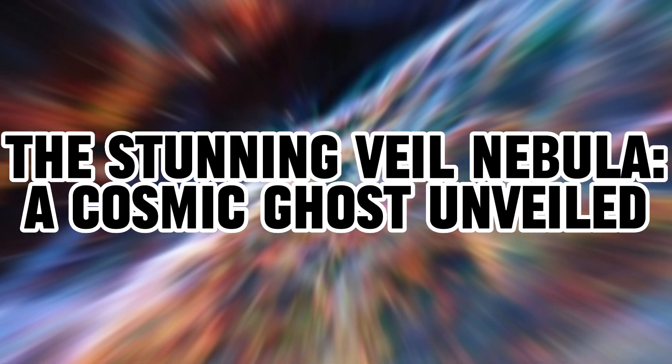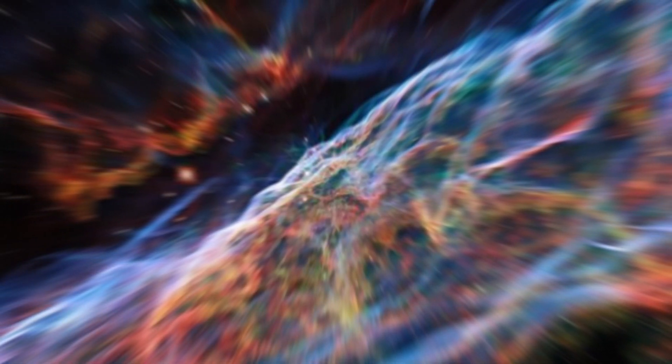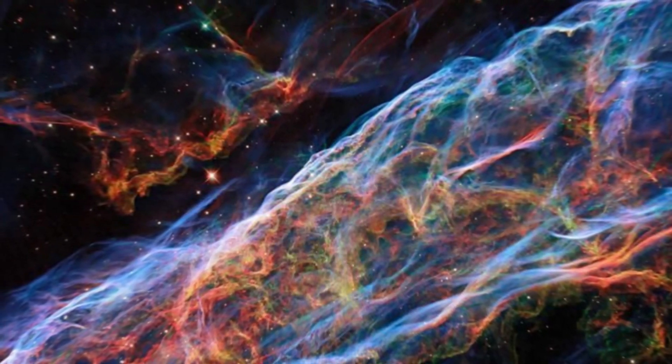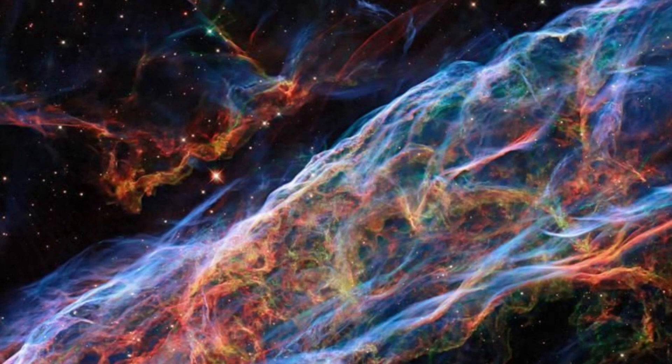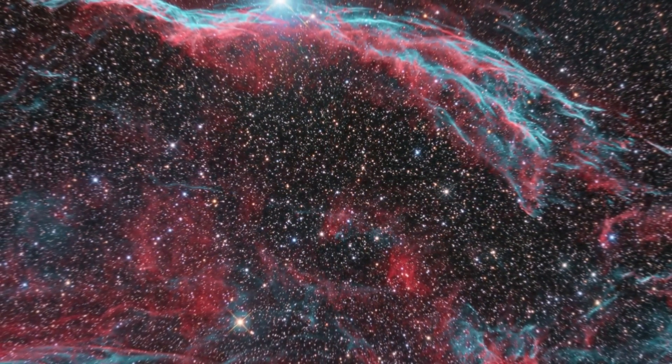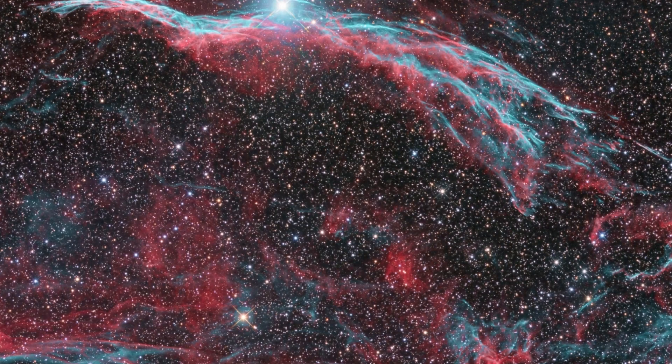The Stunning Veil Nebula: A cosmic ghost unveiled. Prepare to be transported to the realm of celestial artistry, where the James Webb Space Telescope unveils the intricate beauty of the Veil Nebula. This cosmic masterpiece, the Cygnus Loop, resides in the constellation Cygnus, approximately 1,470 light-years away from Earth. Its delicate, wispy tendrils stretch across the sky, weaving a mesmerizing tapestry of stellar destruction and rebirth. The Veil Nebula is the remnants of a massive star that met an explosive end in a supernova explosion. This event, which occurred some 8,000 years ago as observed from Earth, expelled the star's outer layers into space, creating the intricate lacework of gas and dust that we see today. The resulting nebula is divided into several segments, with the West Veil, East Veil, and Pickering's Triangle being the most prominent.